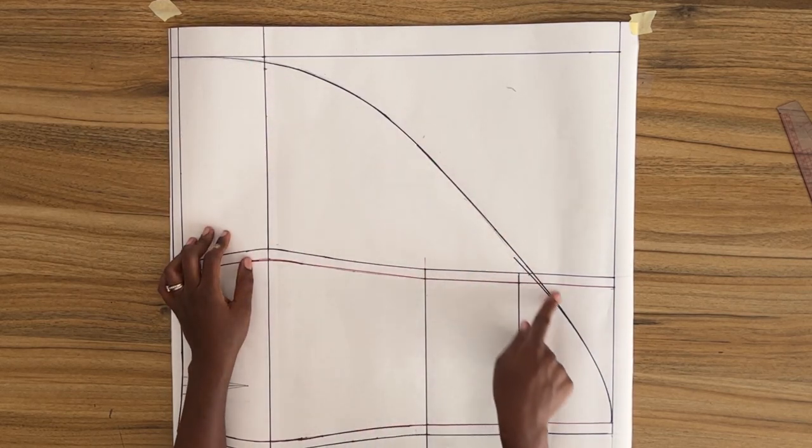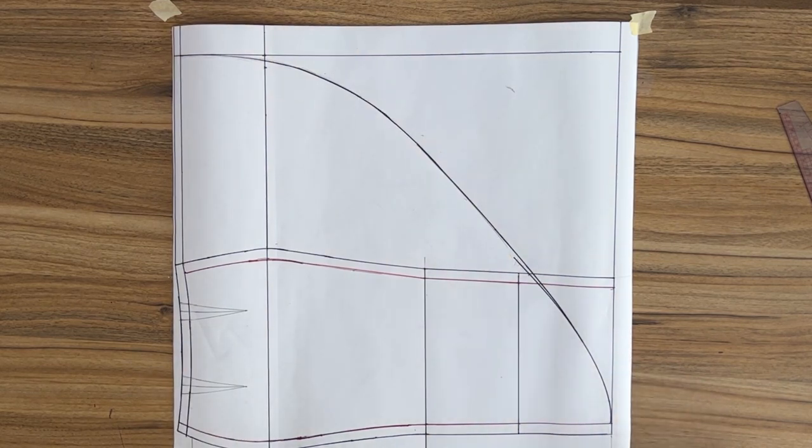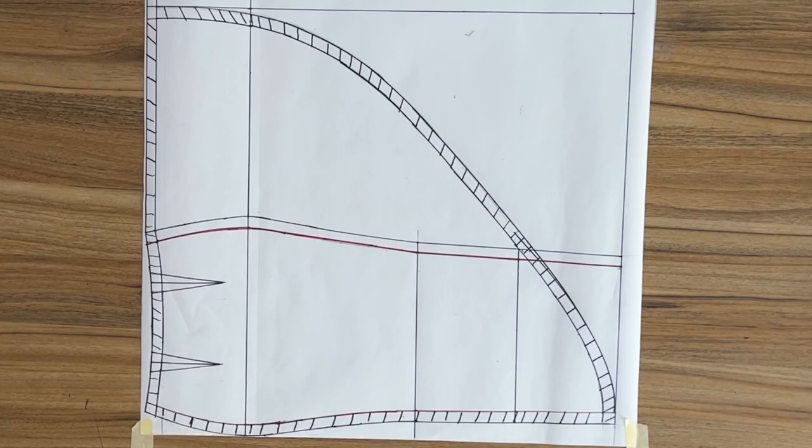So I'm going to go ahead and draw out my hem allowance which is already present on this pattern. So this is what it looks like after drawing out the hem allowance, and then I'll go ahead and cut this pattern out.